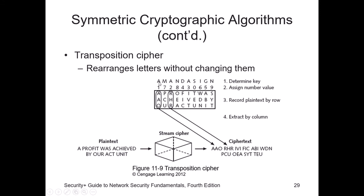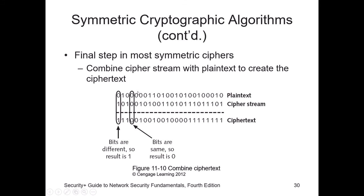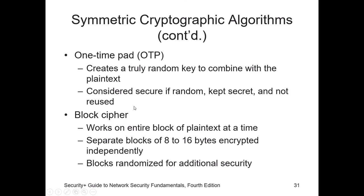Or you can use transposition, where you write down the statement in rows — like 'a profit was achieved' — and transmit row one, then row two, then row three, and so on. When the receiver gets it, they know the key to unscramble it back. That's the transposition cipher. A one-time pad creates a truly random key used just once — it's secure if kept secret, truly random, and not reused.